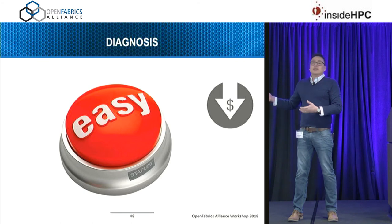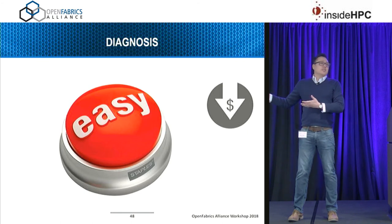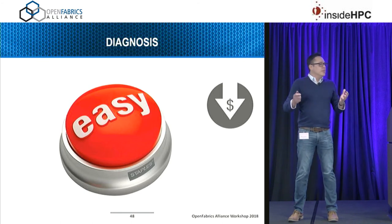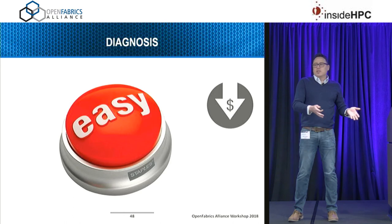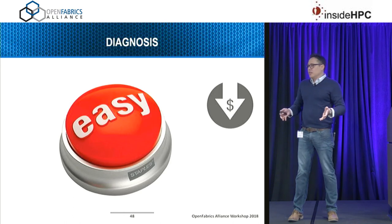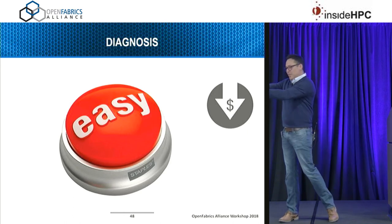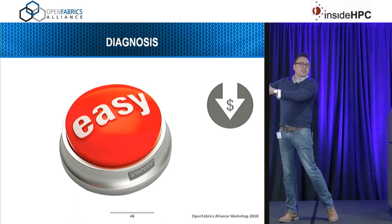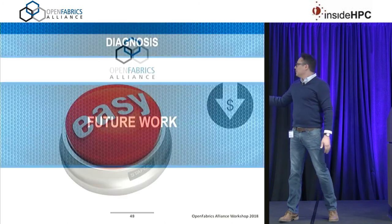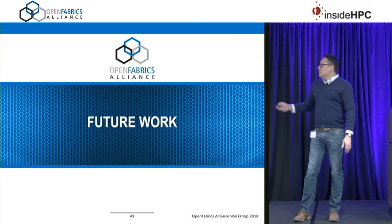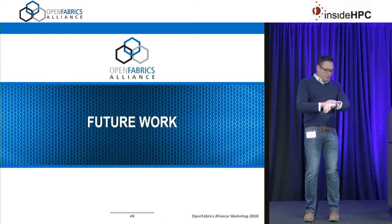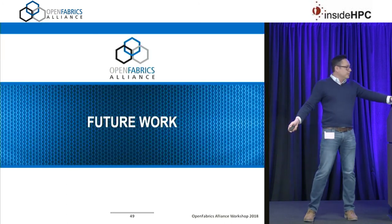In the end, this is what we need: it just needs to be easy. Administrators want this to be easy. The complexity shouldn't be in the administrator's hands — he just needs to roll the box into his closet and say, 'I've got a cloud in my closet.'